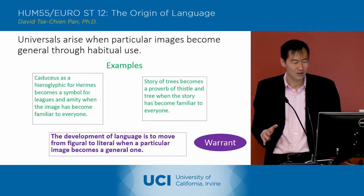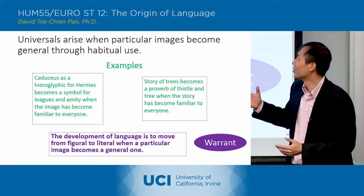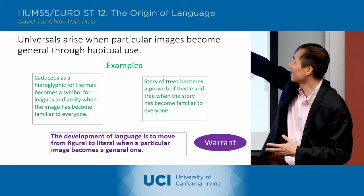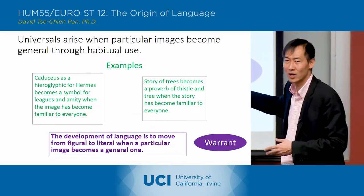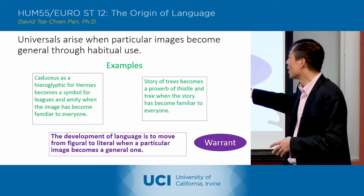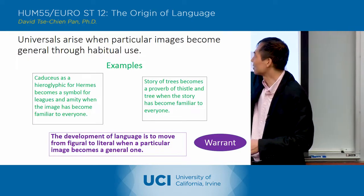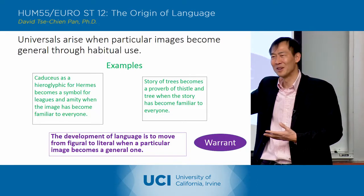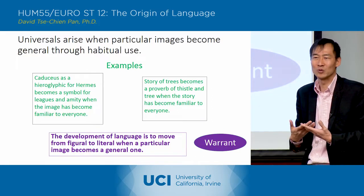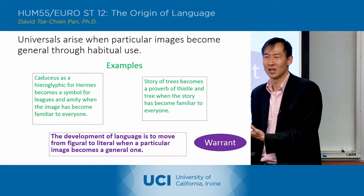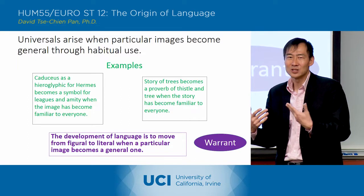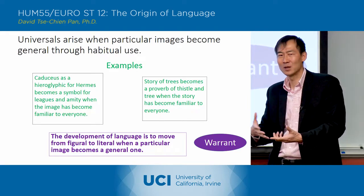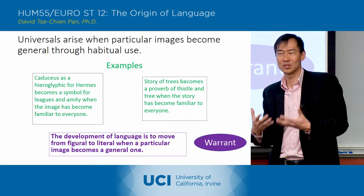So overall, going over the overall warrant that he's working with: he says that universals arise when particular images become general through habitual use. That's his basic thesis. He's got different examples — the caduceus, for example, and the story of the trees and how it transforms itself into proverbs, similes, and metaphors. The general warrant is that the development of language moves from this figural use of action to a more literal use when a particular image becomes a general one. Essentially every word starts out as something strange with a clear imagistic quality.